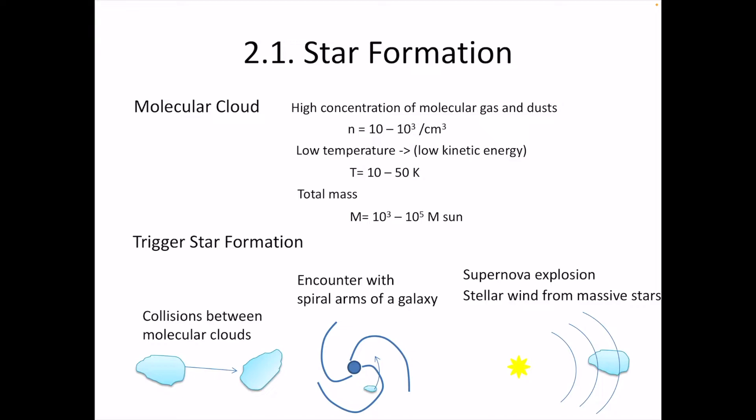Another possible scenario to form a star: the molecular cloud is a member of galaxies, also rotating around the center of the galaxy. Molecular clouds sometimes encounter the spiral arm of galaxies. The spiral arm has high densities, so the molecular cloud is compressed, inducing gravitational instability inside the molecular cloud to form newborn stars. Sometimes, supernova explosions produce shock waves that propagate through the universe and meet molecular clouds. The compressed regions inside the molecular cloud produce higher density regions with stronger gravity, ending up with the formation of stars. This is what we call triggered star formation.